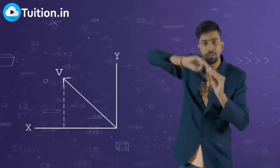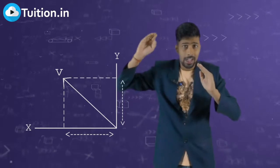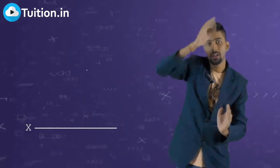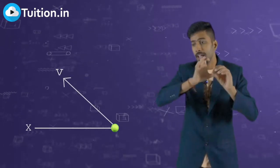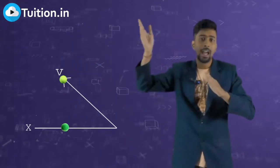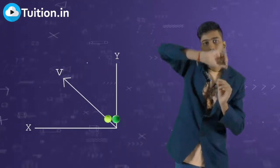So this V velocity has a component in the X direction, it also has a component in the Y direction. The X velocity or the X component of the velocity's job is to take it in the forward direction and the job of the Y component is to take it in the upward direction.